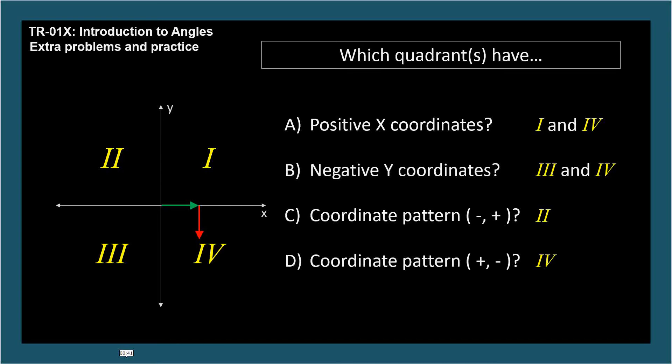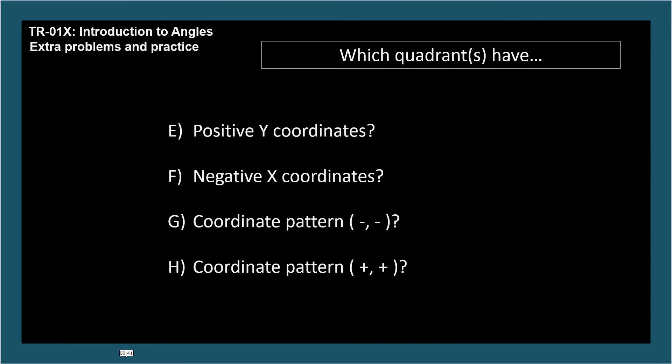Okay, same types of questions, but see the coordinate system in your head. Which quadrants have positive y coordinates? 1 and 2. Which quadrants have negative x coordinates? That's 2 and 3. Which quadrants have coordinate pattern negative comma negative? Quadrant 3. Which quadrants have coordinate pattern positive comma positive? That's quadrant 1.